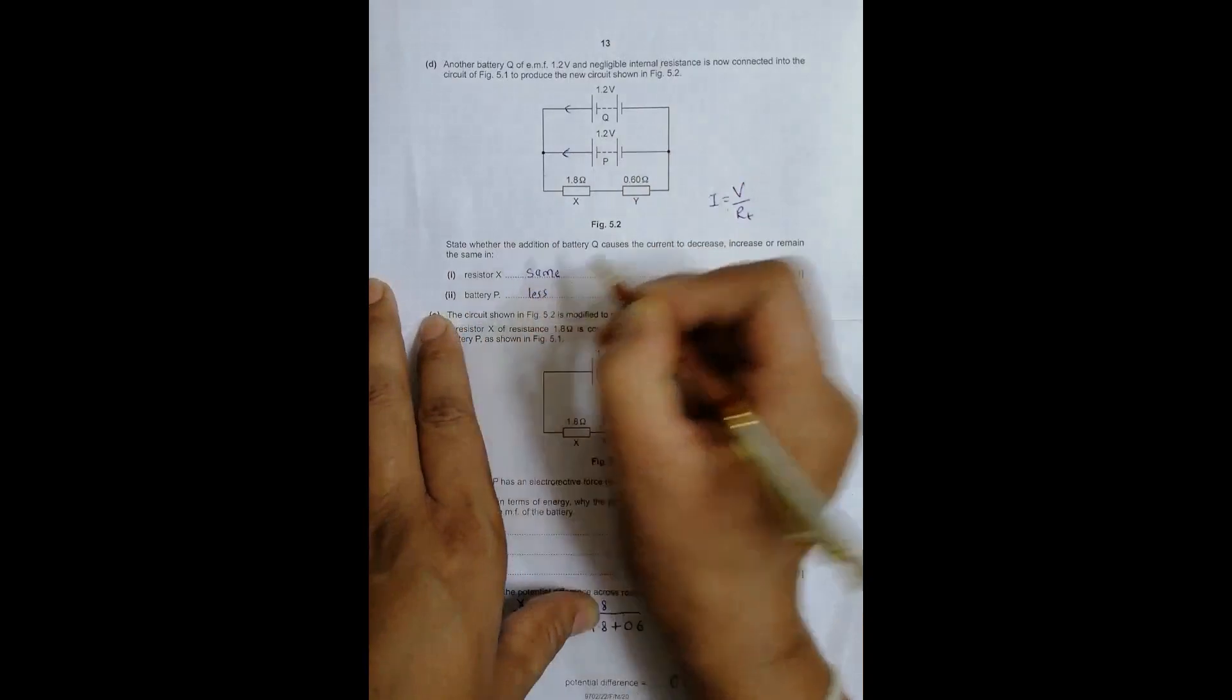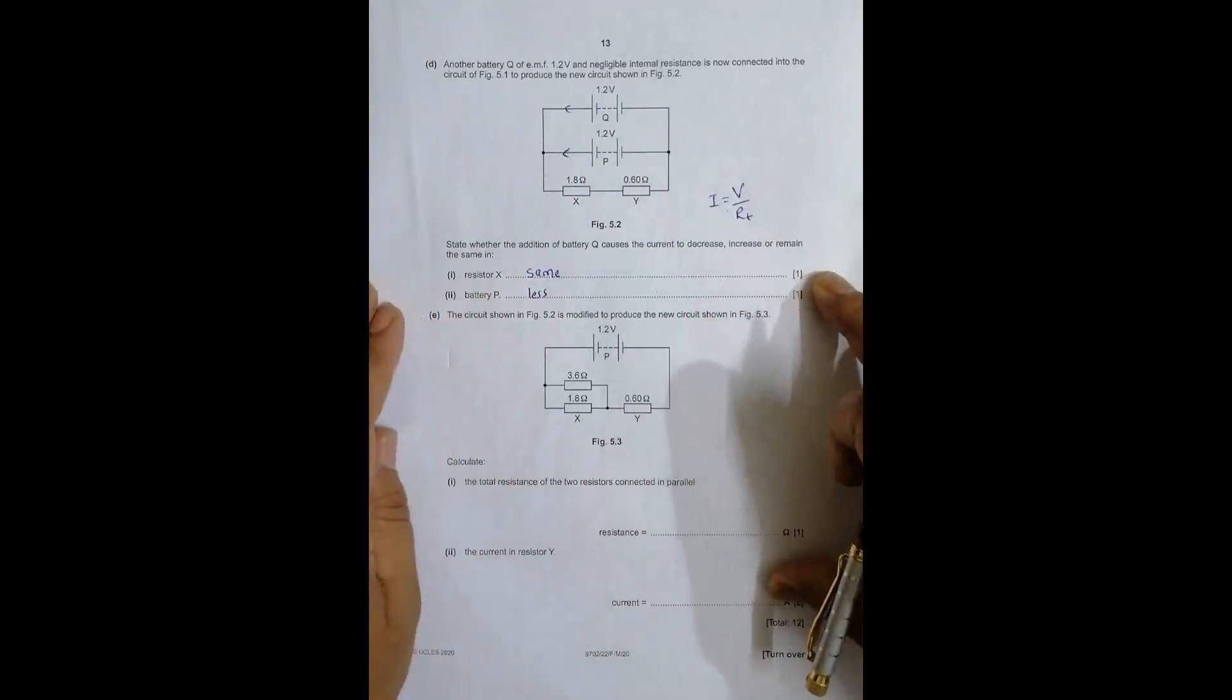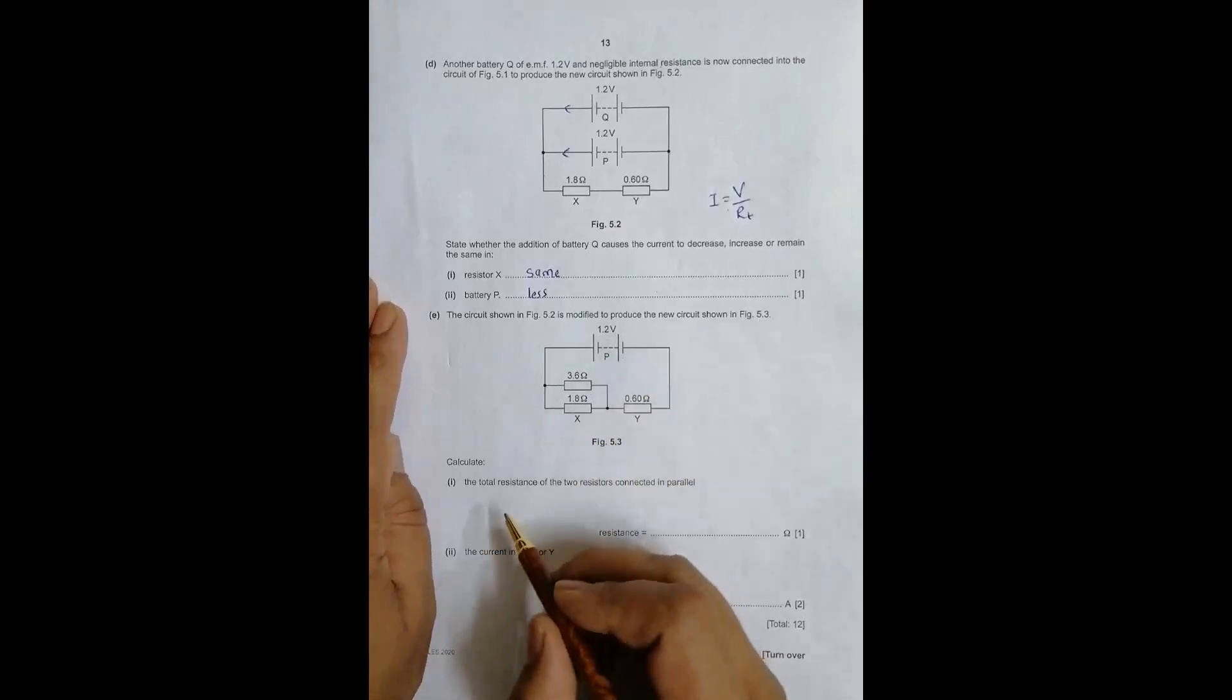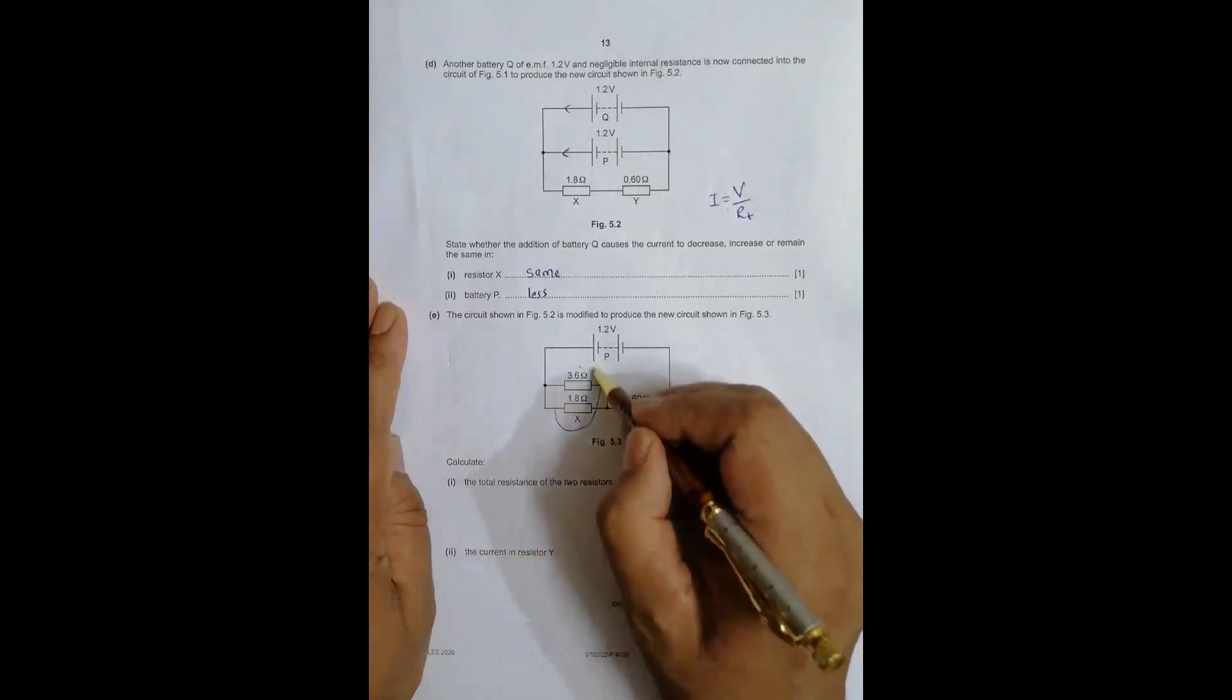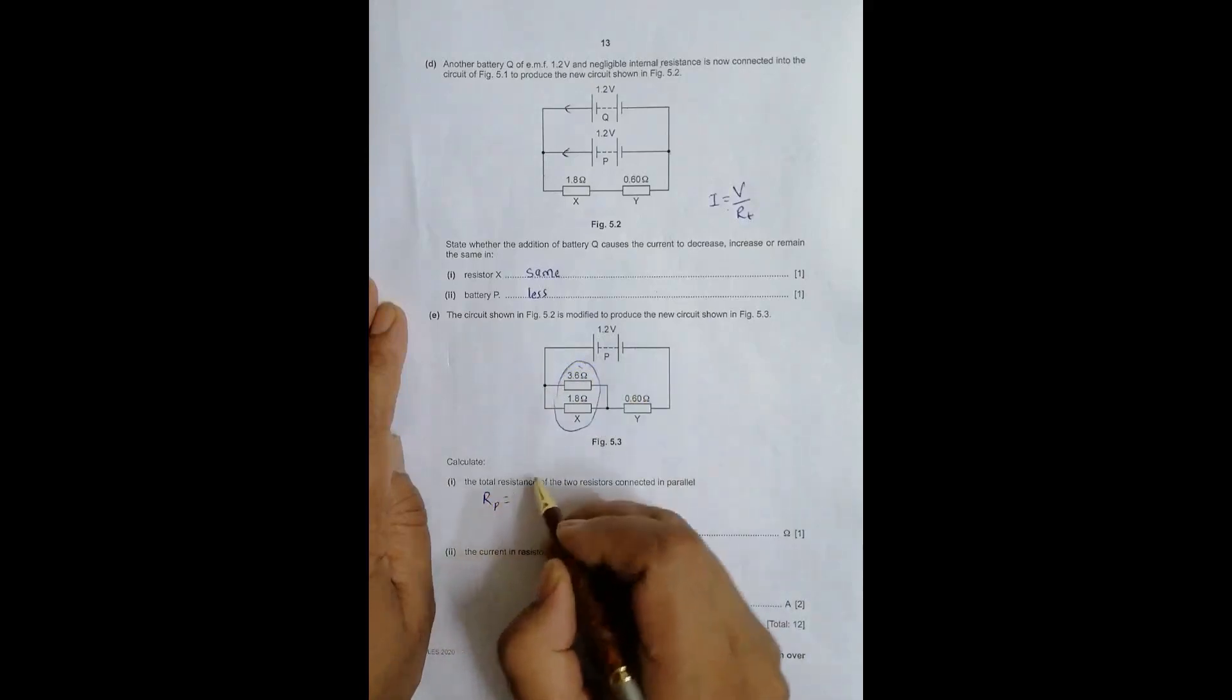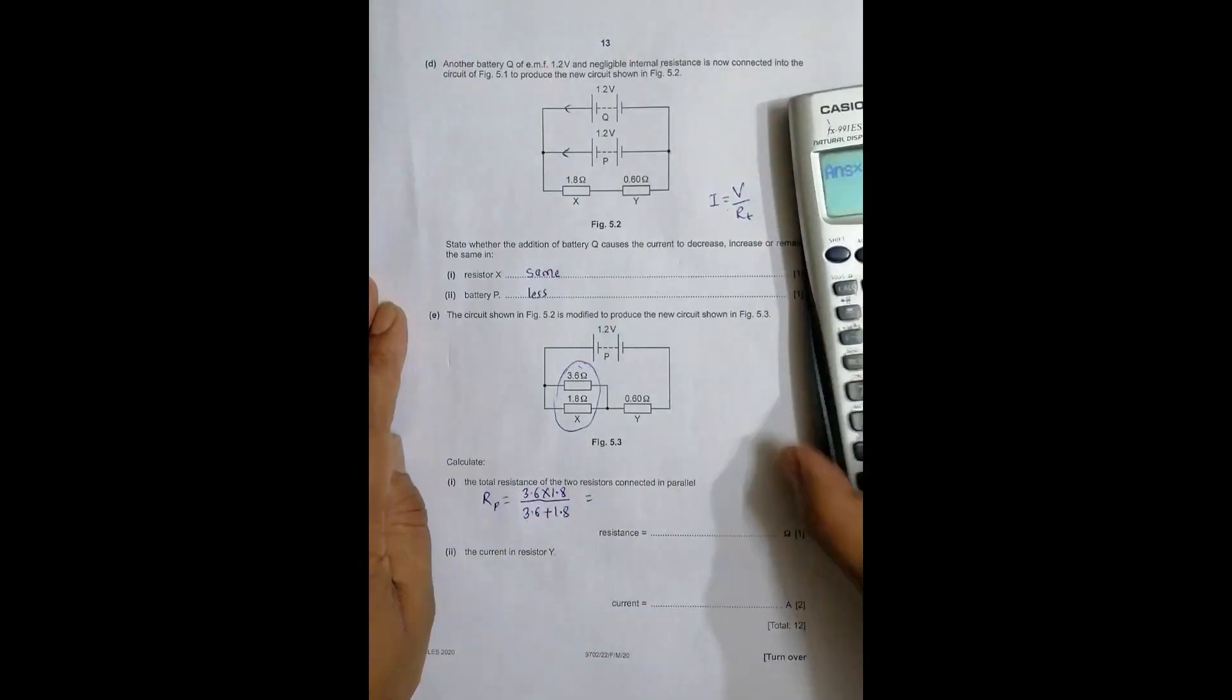Question E: the circuit shown in figure 5.2 is modified to produce a new circuit shown in figure 5.3. Calculate the total resistance. We have to calculate the parallel resistance: RP = 3.6 × 1.8 divided by 3.6 + 1.8. This is the formula for parallel combination.